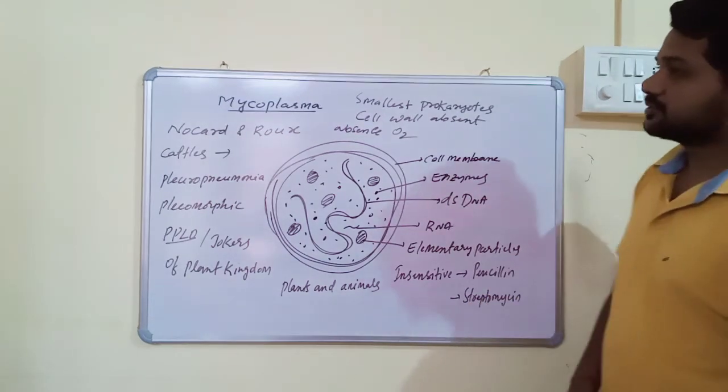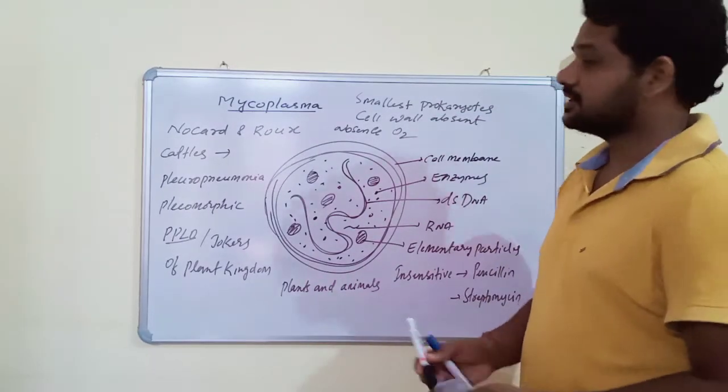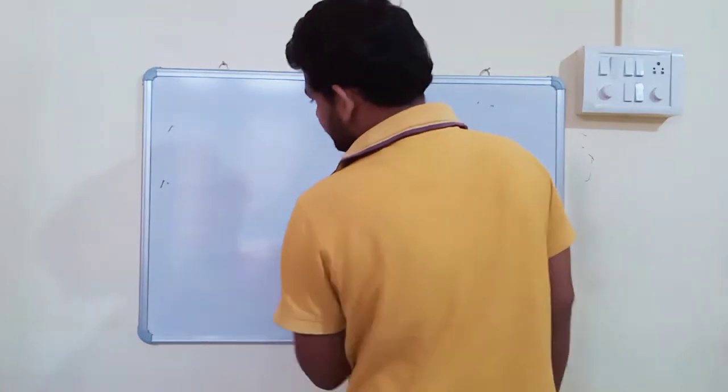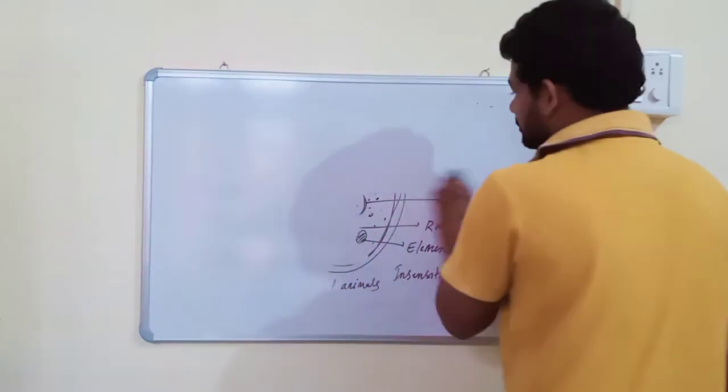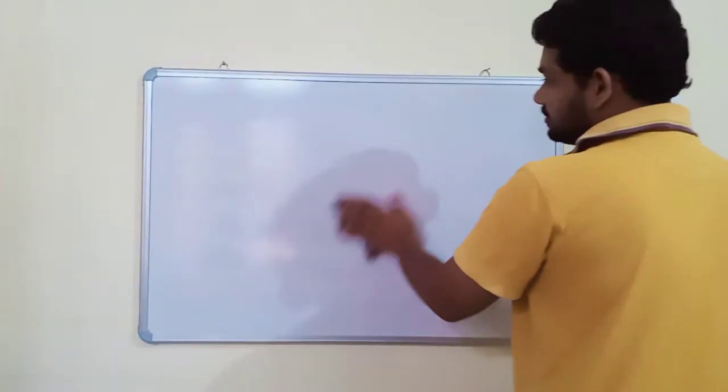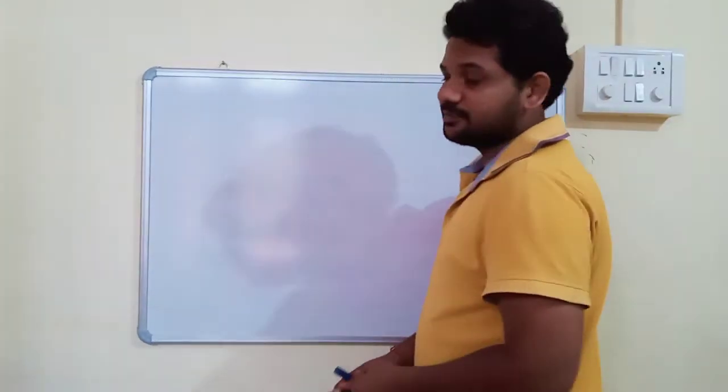So they are the smallest prokaryotic organisms which can infect both plants and animals. These are some of the important U-bacteria. U-bacteria has several subgroups, but we will discuss only cyanobacteria and mycoplasma.